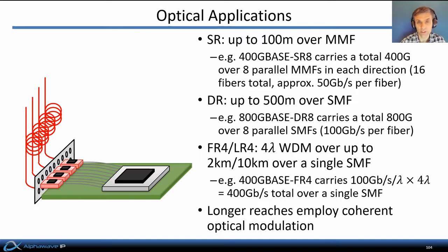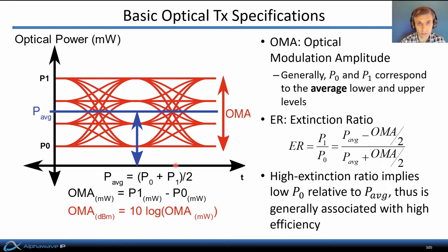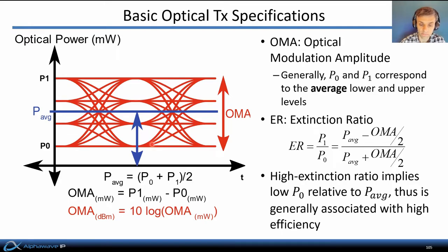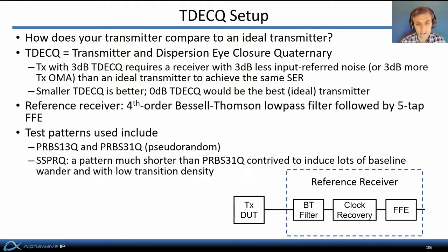Reaches beyond 10 kilometers generally employ coherent optical modulation, which is beyond the scope of this presentation. Optical transmitter specifications in many cases are similar to those for electrical links, but there are a few unique ones. OMA is the optical modulation amplitude, defining the distance between the maximum and minimum power of transmitted light used for modulation. Extinction ratio (ER) defines what fraction of the maximum optical power is extinguished when transmitting the low level, expressed in dB. A high extinction ratio implies relatively low minimum power relative to average optical power, associated with more efficient use of optical power.